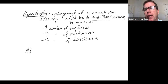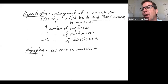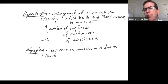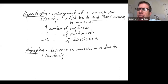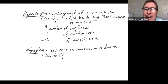Likewise, if we stop our training exercises, the fibers get smaller as well. That brings us to the next term - atrophy, which means decrease in muscle mass or size due to inactivity. When a muscle is left inactive, the individual fibers decrease in size. In extreme cases, if somebody's bedridden for a long time with disease, that muscle tissue can actually start to break down, and that's irreversible in the human body.